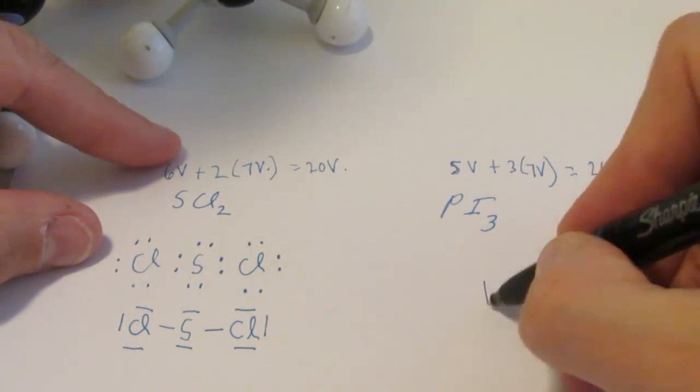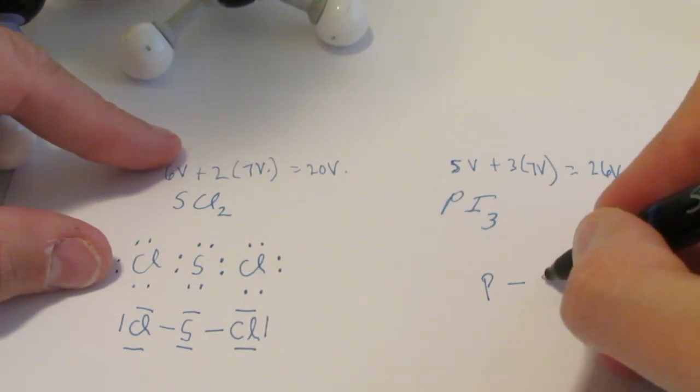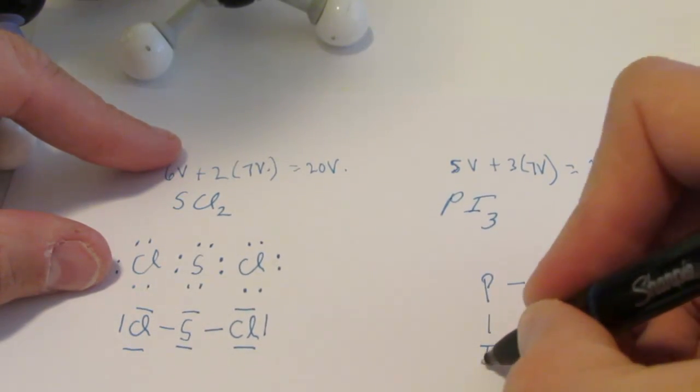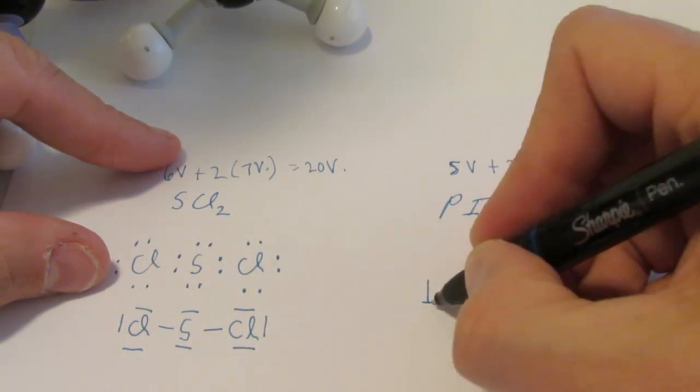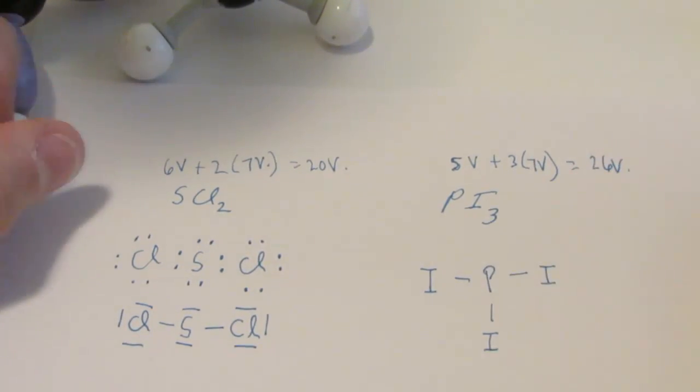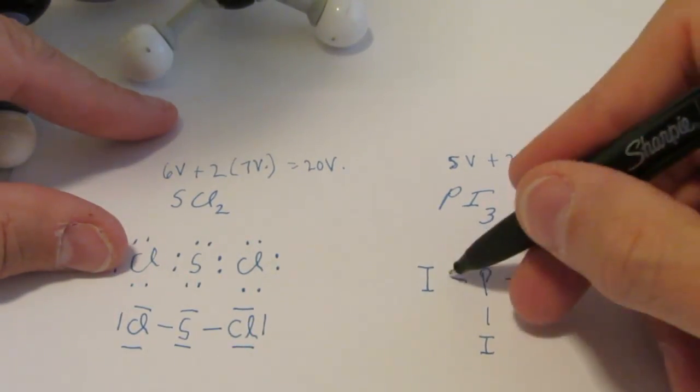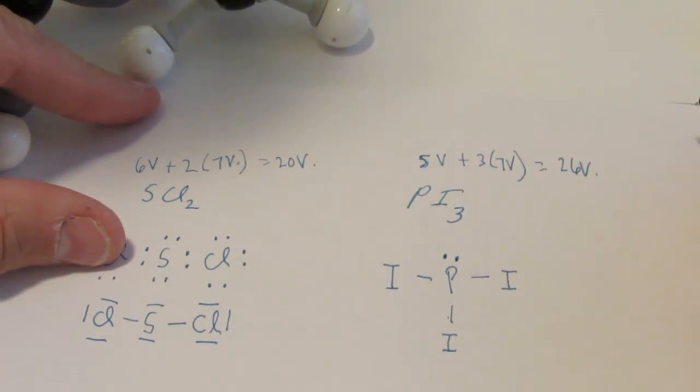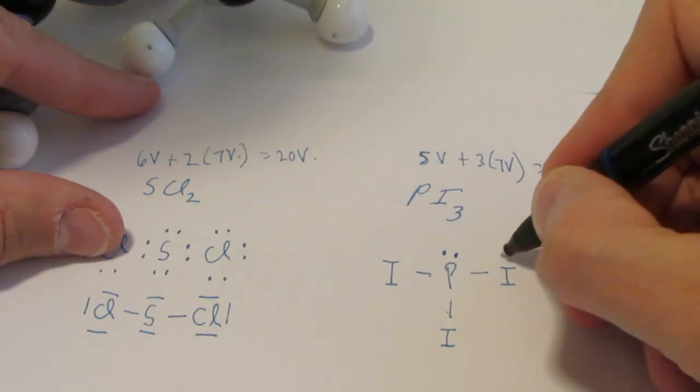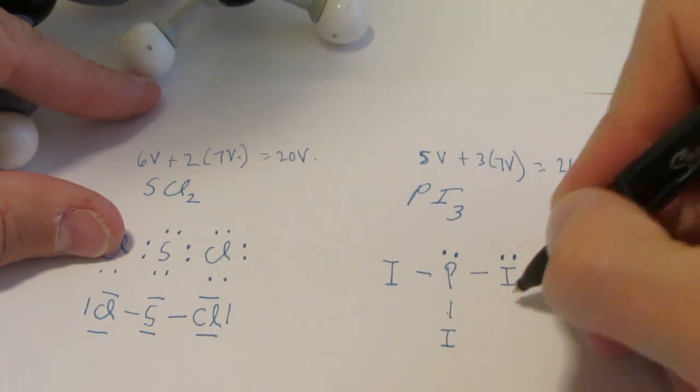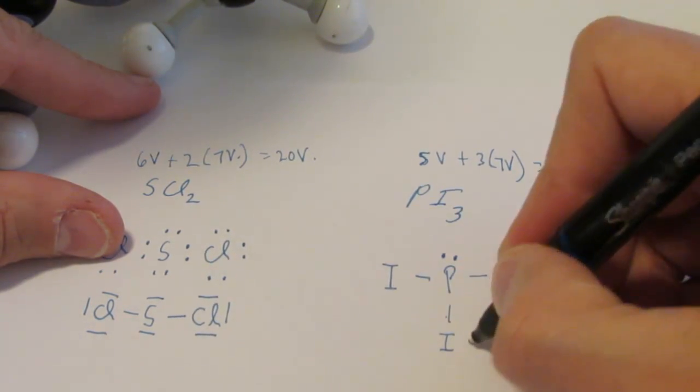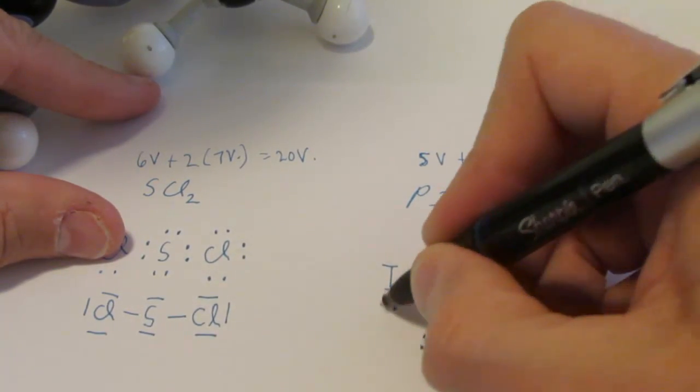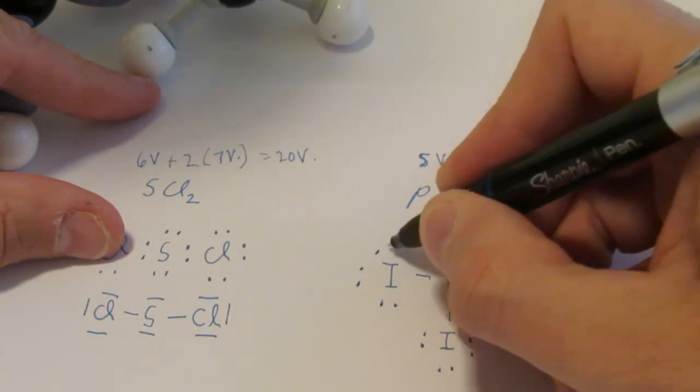Of course, we'll put phosphorus in the center. And we'll make it symmetrical. We'll put an I on one side, an I on the bottom, and an I on the left. I'm using lines here to represent pairs of electrons. So that's 2, 4, 6 of my 26. Let's put a pair above phosphorus to give phosphorus its complete octet. And we'll put 3 more pair around each iodine.